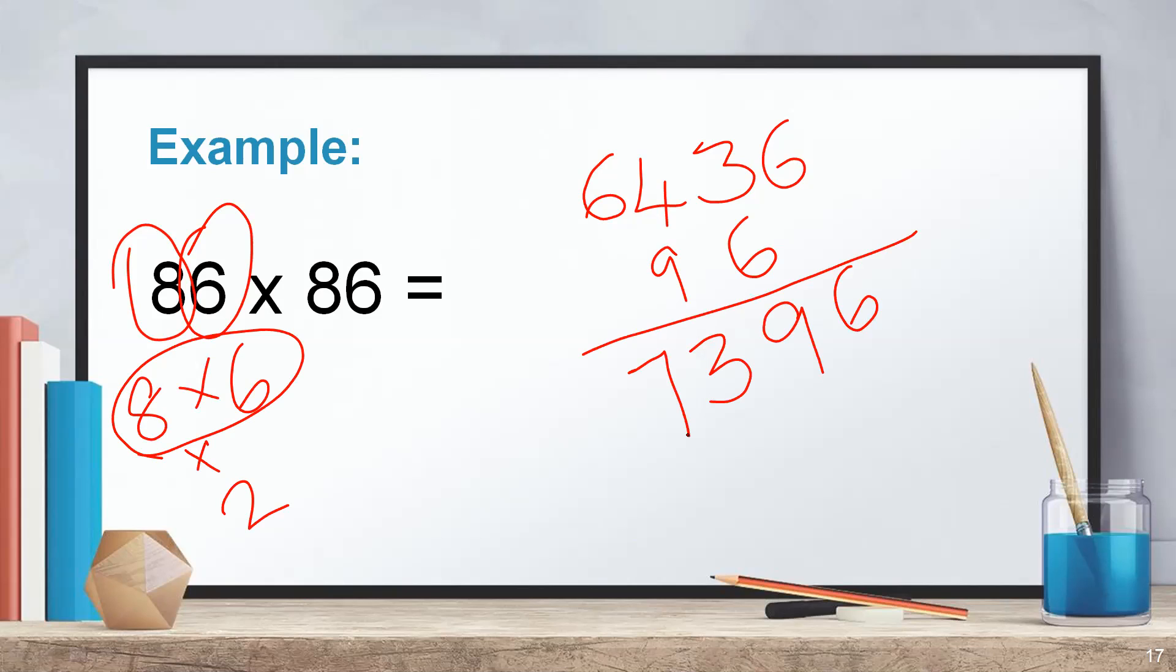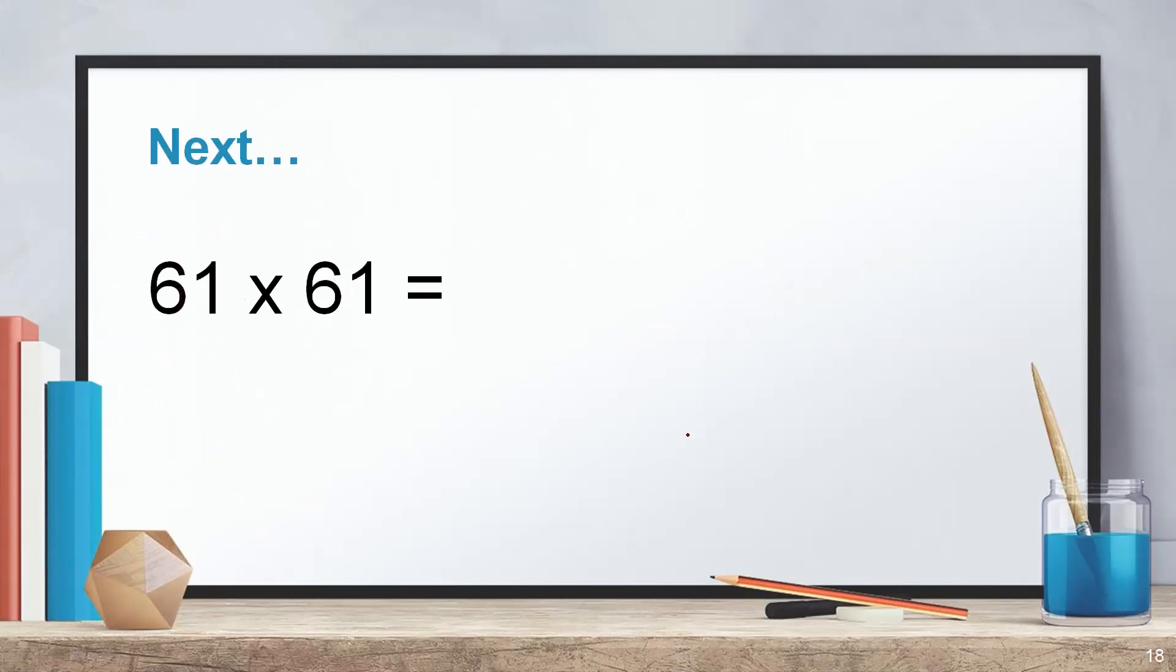With more practice, you will become quicker in solving this too. You can take 3 seconds to solve these kinds of questions also. Let's practice faster. 61 into 61. Write the square of 6 as 36. Write the square of 1 as a two-digit number which means 01. Multiply 6 and 1, it becomes 6. Then multiply it with 2. 6 into 2 is 12. 1, 2, 7, 3. 3,721. Hope you are waiting for the next set of questions to do yourself.